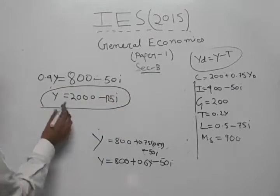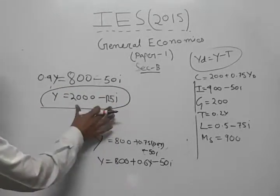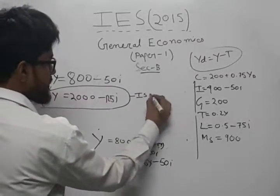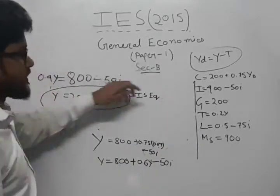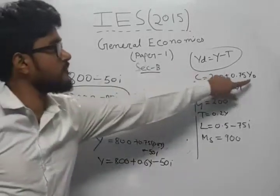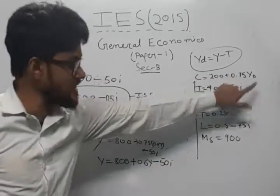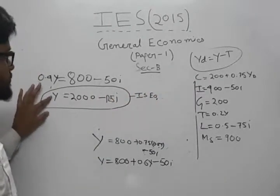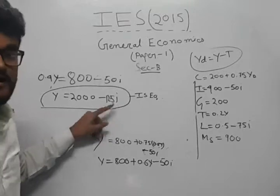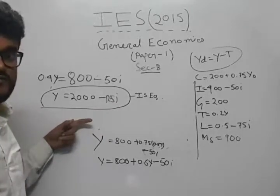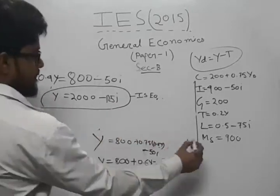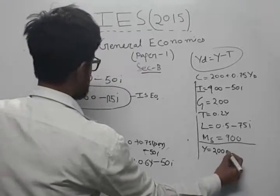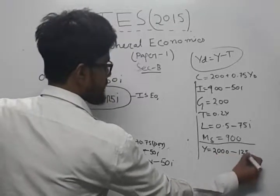Dividing 800 minus 50i by 0.4, we get Y equals 2000 minus 125i. This is nothing but the IS equation. So the IS equation is Y equals 2000 minus 125i, showing a negative relationship between Y and i.